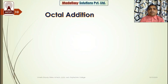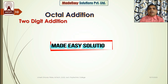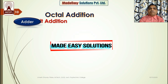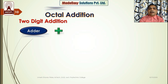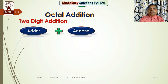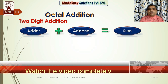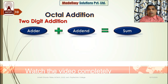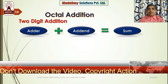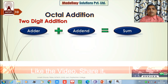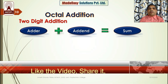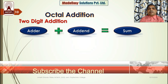Let us start with octal addition. We will follow the same principle we have seen in binary addition and decimal addition — we will first perform two-digit octal addition. We will have an adder and add an addend to it to get the result, which we call the sum. In the octal number system we have 8 basic digits, so the adder can be from 0 to 7 and the addend can be from 0 to 7, giving 8² = 64 combinations. Let us consider some examples.